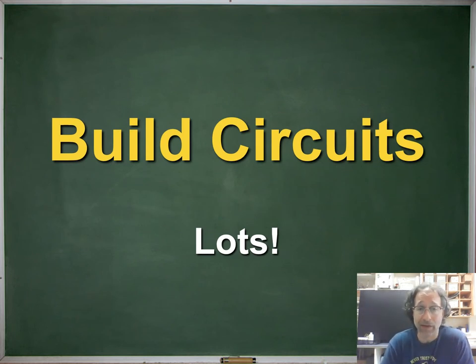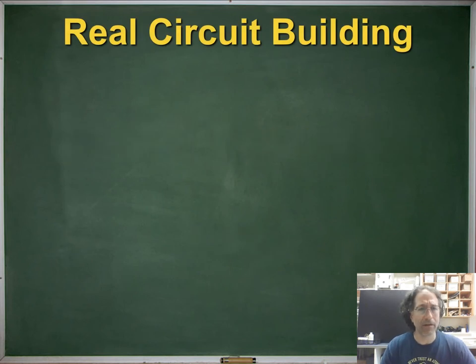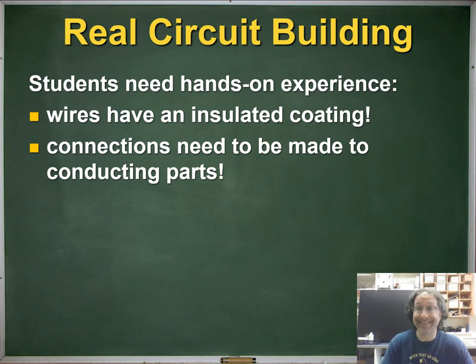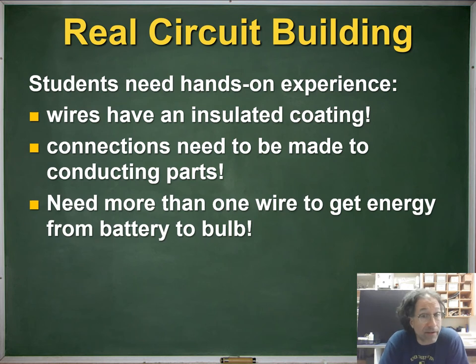Now, it's really important for our students to build circuits and build lots of them. And by that, I mean, actual physical circuits in front of them. To do some real circuit building, they need this hands-on experience. They have to figure out all sorts of really basic things that most of us teachers take for granted. For example, wires have an insulated coating on them. And so they can't just conduct electricity just by touching the plastic sheet. And so connections need to be made to the conducting parts of the circuit. Students also need to figure out that they need more than one wire to get energy from a battery to a bulb. I think about our gadgets that we use. We usually just connect one wire from our charger into our phone or our device, and that seems to do the trick. But when we're dealing with a really simple circuit, that doesn't work because we don't see that inside the wires of our chargers, there's actually multiple filaments of wire that conduct electricity.